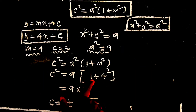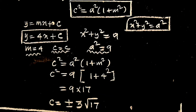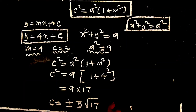Applying the condition: c squared is equal to 9 into 1 plus 1 plus 1, giving 9 into 17. Therefore c is equal to plus or minus 3 into root 17.